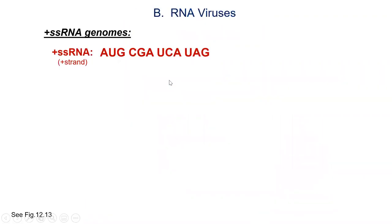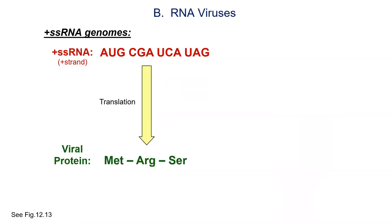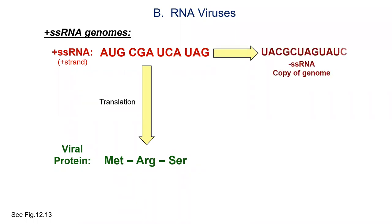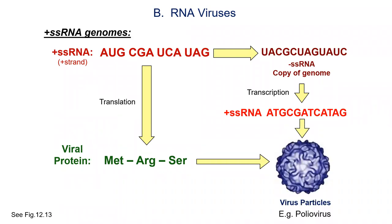Single-stranded RNA viruses skip the DNA step entirely — they go right to translation to make viral proteins. The genome usually has to get copied, which sometimes involves making a negative copy of the genome, which can then get transcribed into a plus copy that becomes new genomes. Poliovirus is a good example of that, and we'll talk about it later in the course.